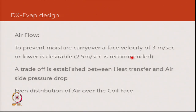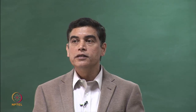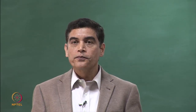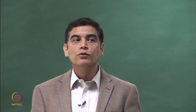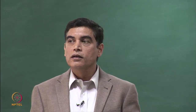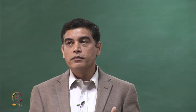Another aspect to look at is the air distribution over the coil face. When designing the air flow path, air enters the air conditioner through some opening and a blower draws air over the coil, so we need to space components in a way that there is uniform air distribution.